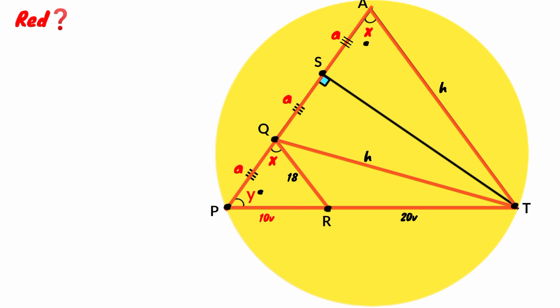So if we take the ratio of their sides, this side facing angle Y divided by this side facing angle X must be equal to this side facing angle Y divided by this side also facing angle X. So H over 10V plus 20V equals 18 over 10V.